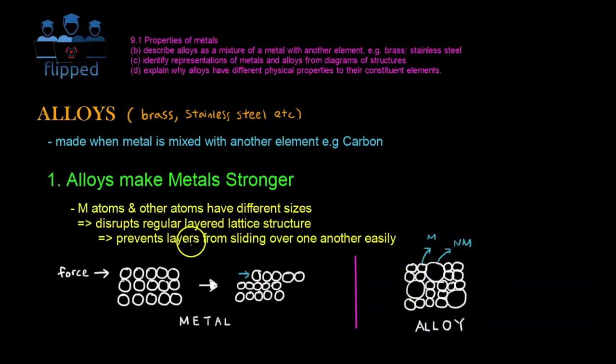And this prevents the layer from sliding over one another easily. So for example, I apply a force, maybe say here, the first layer does not slide over the second layer because there's this big atom, non-metal atom, blocking it. And hence it cannot slide over easily, and hence this is stronger.